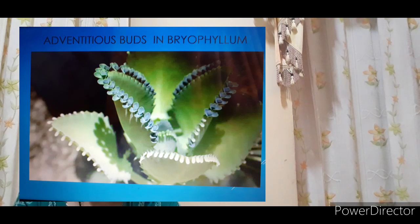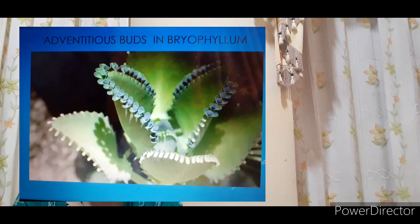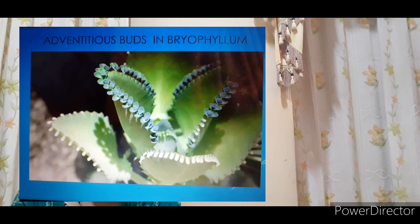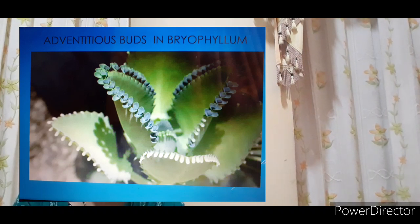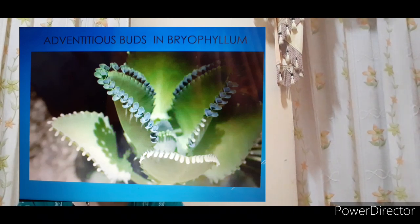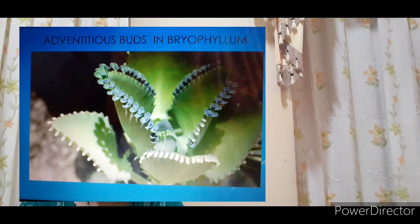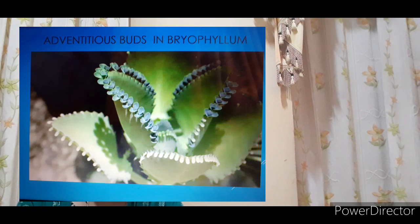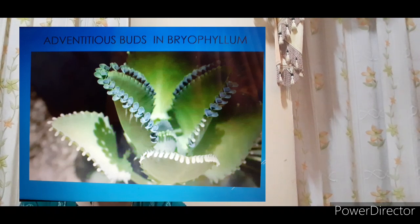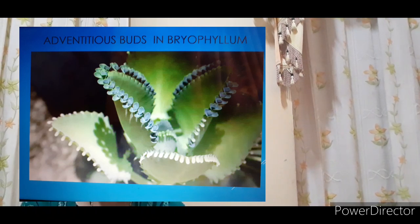Next we will discuss the bryophyllum plant and the type of reproduction present in it. The adventitious buds arise from the notches or margins of the leaves and grow into independent plantlets. So in the bryophyllum plant, vegetative reproduction occurs through adventitious buds.